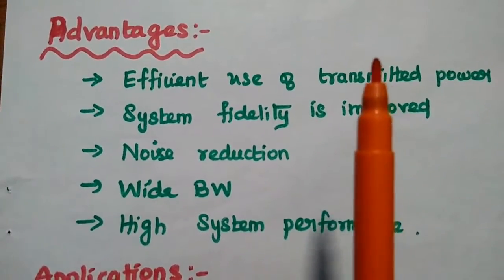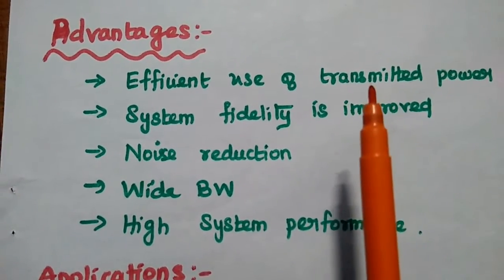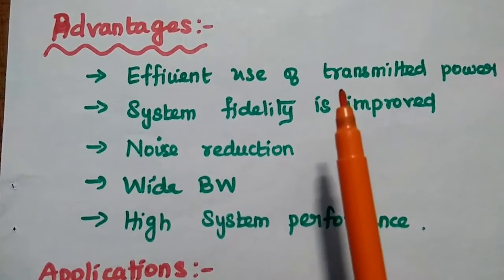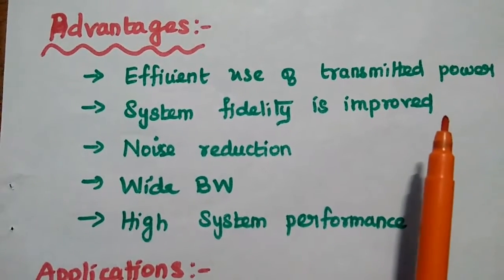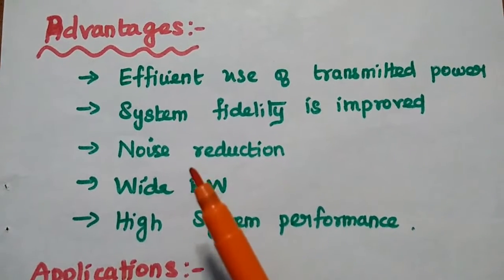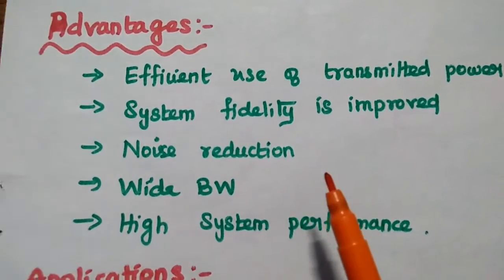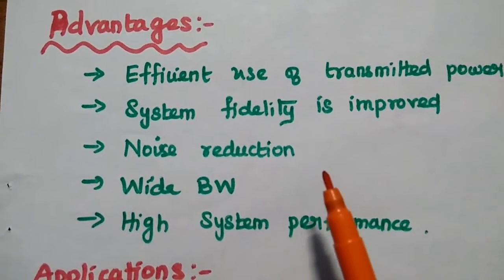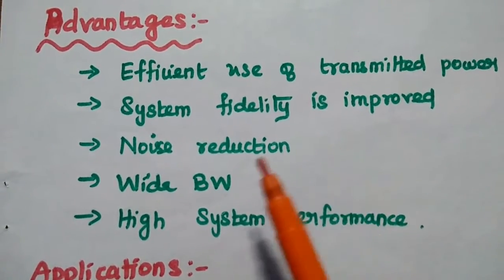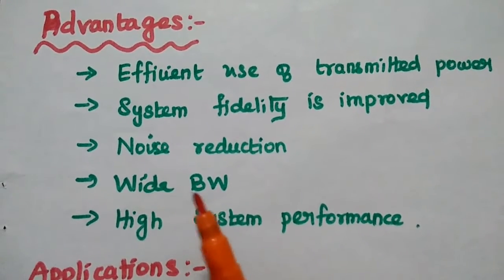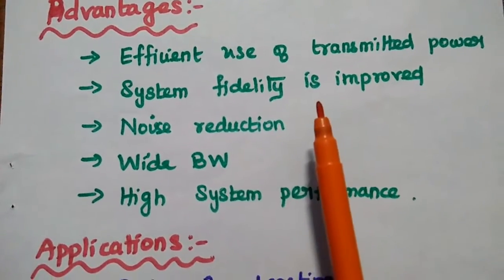Advantages of angle modulation techniques: first, efficient use of transmitted power — since there is no amplitude variation, the average power equals the carrier power, so we can utilize the transmitted power to the maximum. System fidelity is improved when compared to amplitude modulation. The next major advantage is noise reduction — most noise occurs due to unwanted amplitude variations, but in angle modulation there is no amplitude variation, so we can attain maximum efficiency and noise is reduced. Additionally, angle modulation has wider bandwidth, hence we can achieve high system performance.